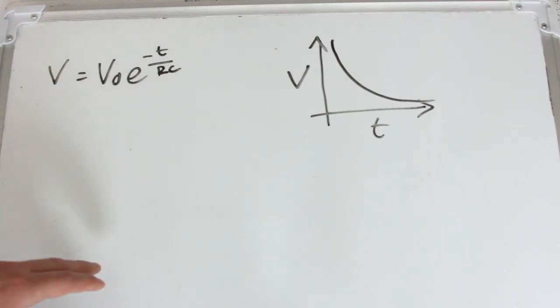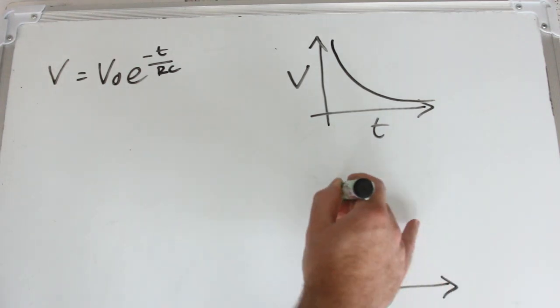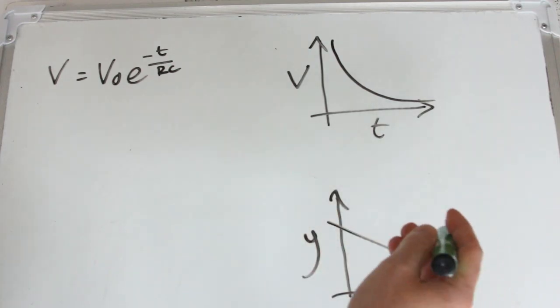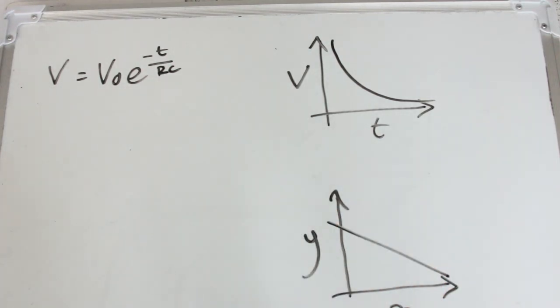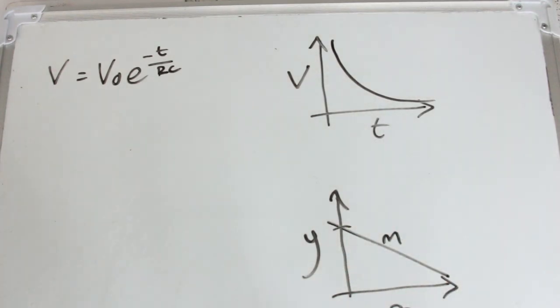The trickiest part is actually getting from this into a straight line model that you can use. So what I'm going to do is show you how to manipulate this so that we can actually get a good old y equals mx plus c graph, and we can actually do some maths and understand what that gradient and that intercept would mean.